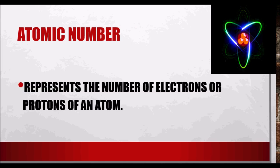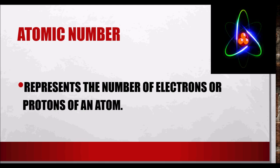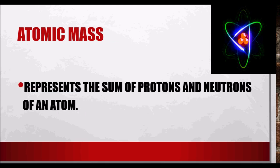The atomic number represents the number of electrons or protons of an atom. It is a given fact that the number of electrons and number of protons are equal to the atomic number of an element. For example, hydrogen has atomic number 1, so hydrogen has one proton and one electron. Atomic mass represents the sum of the protons and the neutrons of an atom.